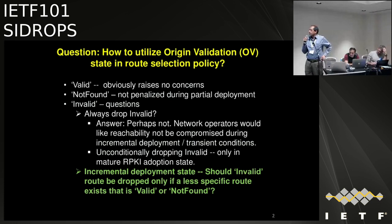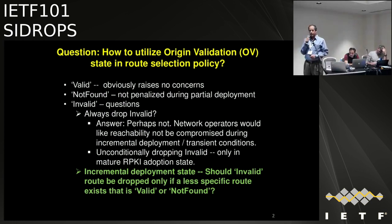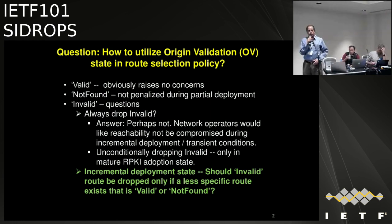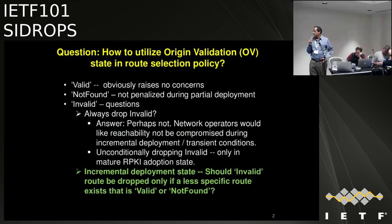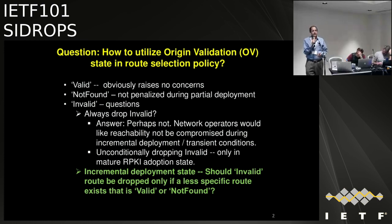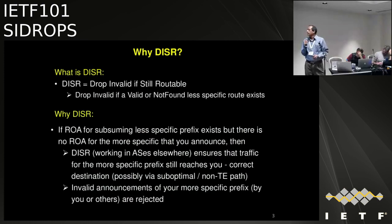Valid obviously raises no concerns. Not-found is not penalized during partial deployment. The question is about the invalid. Should we always drop invalid? The answer is perhaps not, because network operators would like reachability not to be compromised during incremental deployment or transient conditions. Unconditionally dropping invalid could only be done in a mature state of RPKI deployment. During incremental deployment, should we drop invalid routes only if a less-specific route exists that is either valid or not-found? We call that the DISR policy.